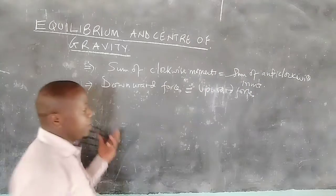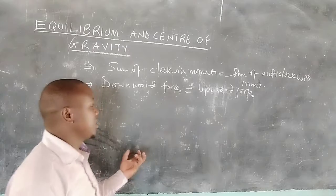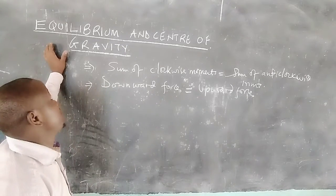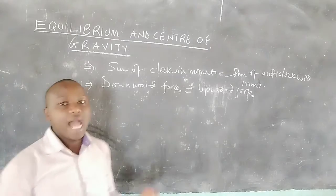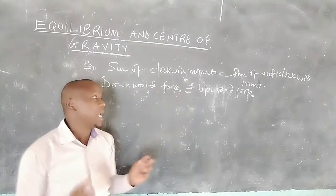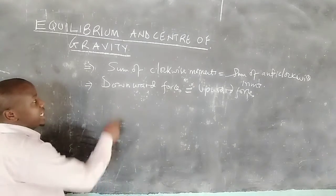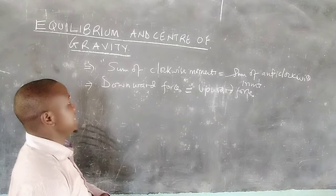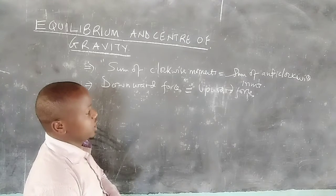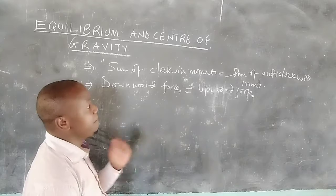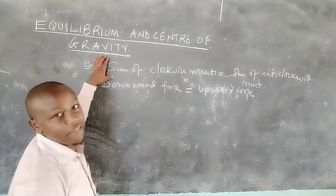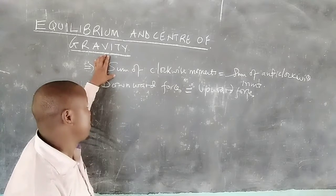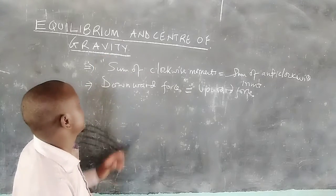All forces must balance for a body to remain in equilibrium. A state of equilibrium is simply a state of balance, and it is governed by the principle of moments — the sum of clockwise moments equals the sum of anti-clockwise moments at the same point.